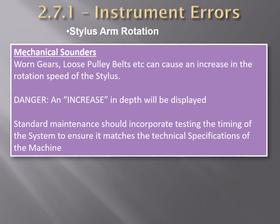The next instrument error is the stylus arm rotation error, affecting mechanical graphical types. For example, if the correct speed is 20 RPM but the gearing has slipped or worn out and the actual speed is 30 RPM, then all soundings will register too great. This error can be large and dangerous.